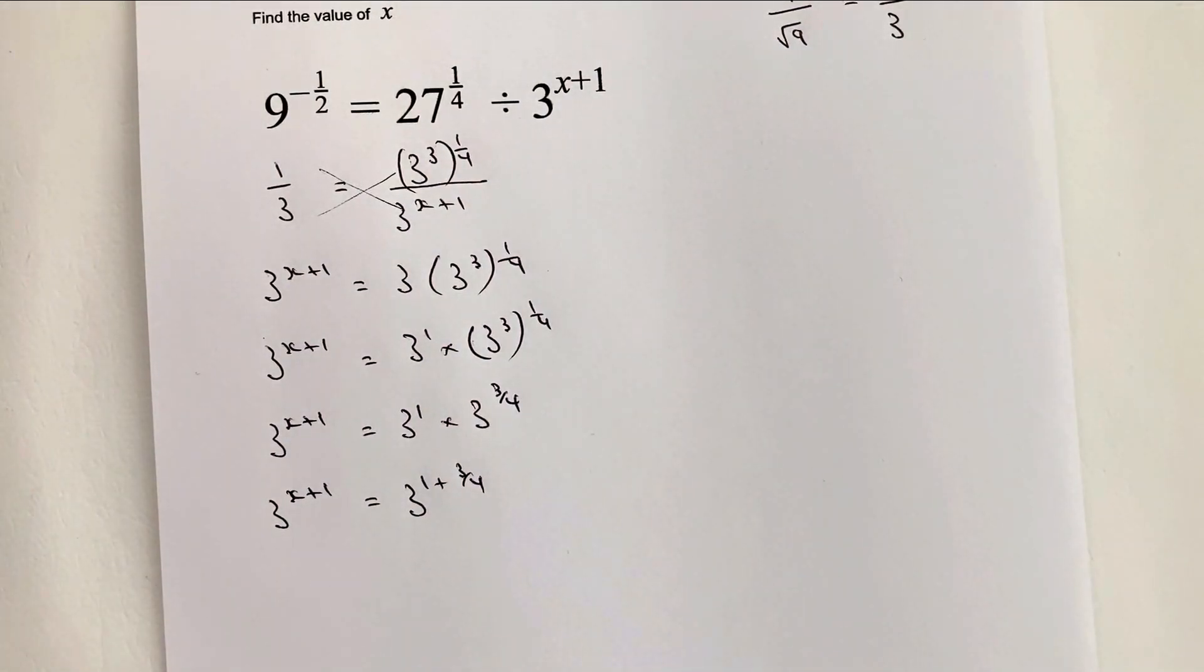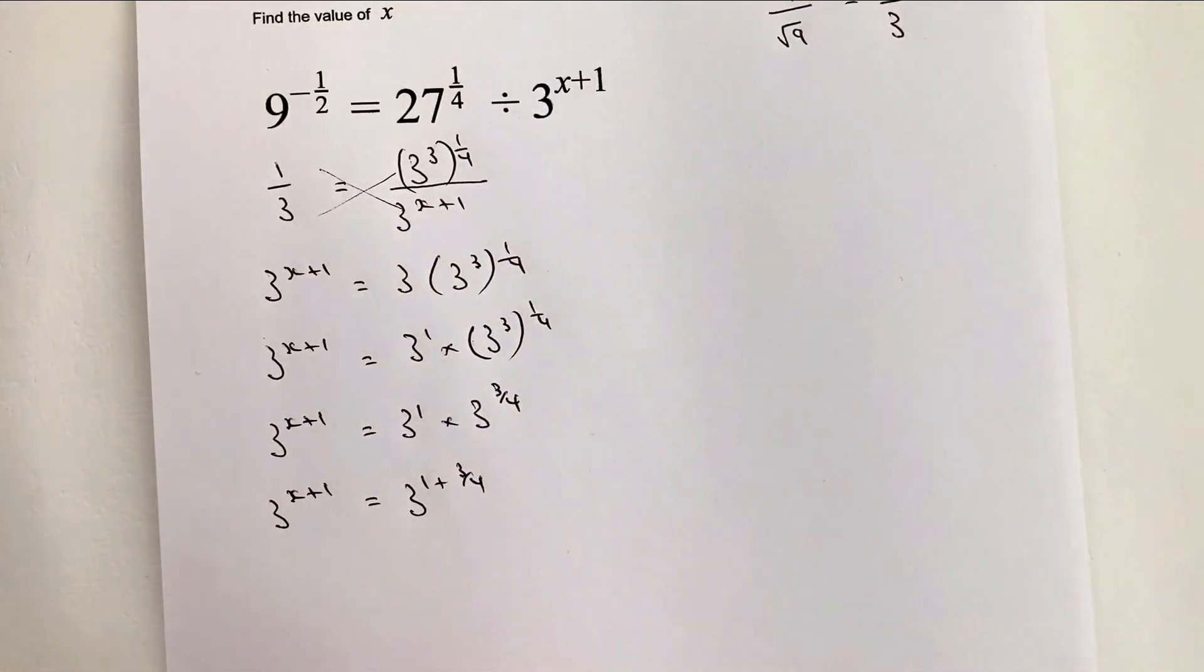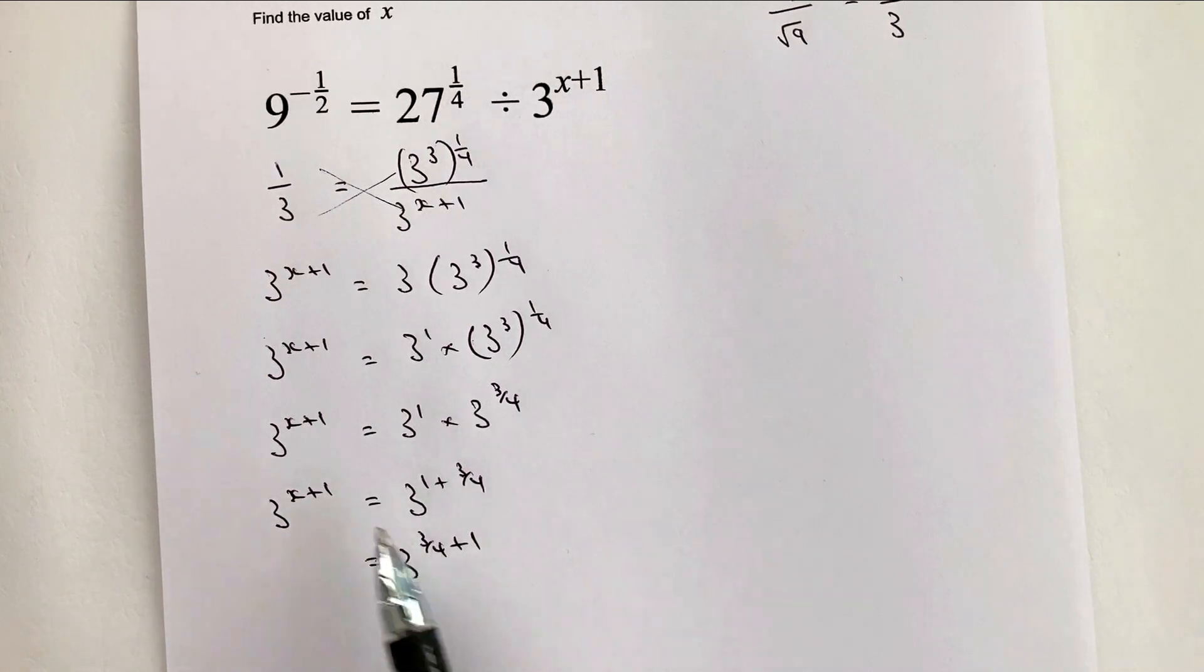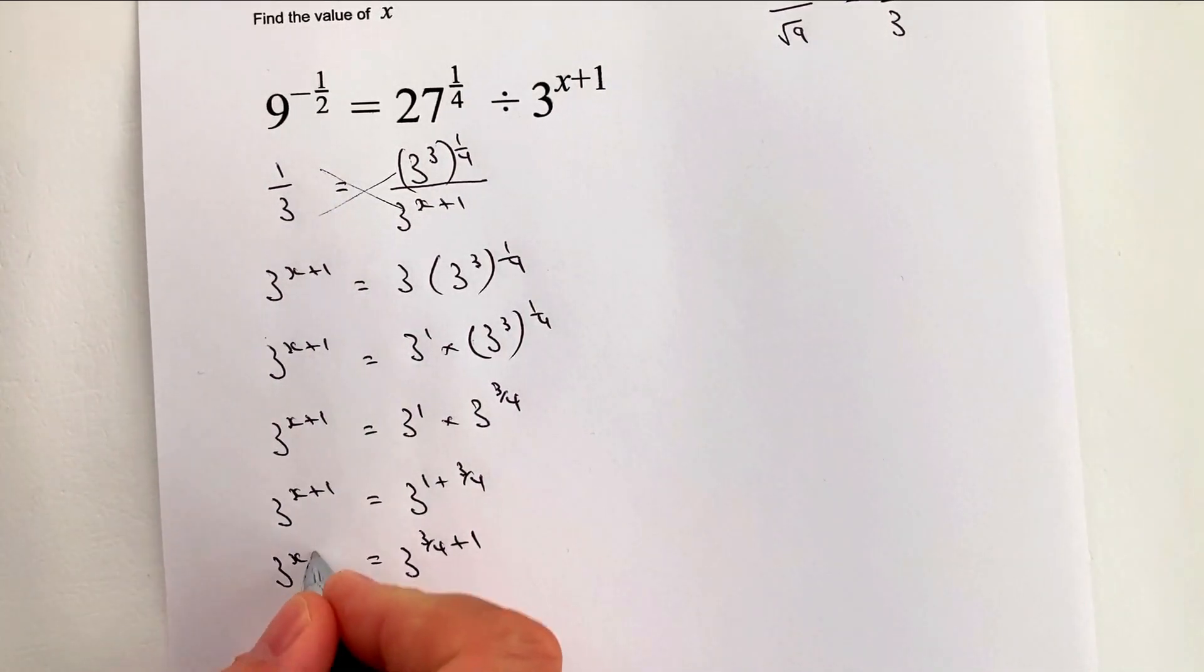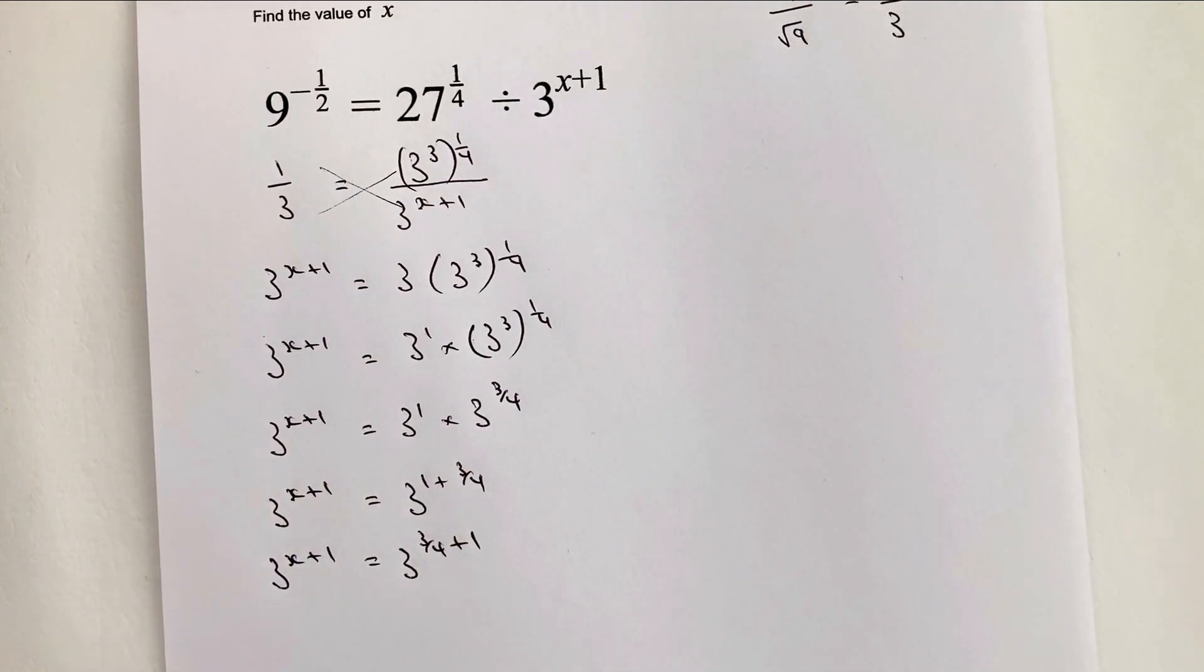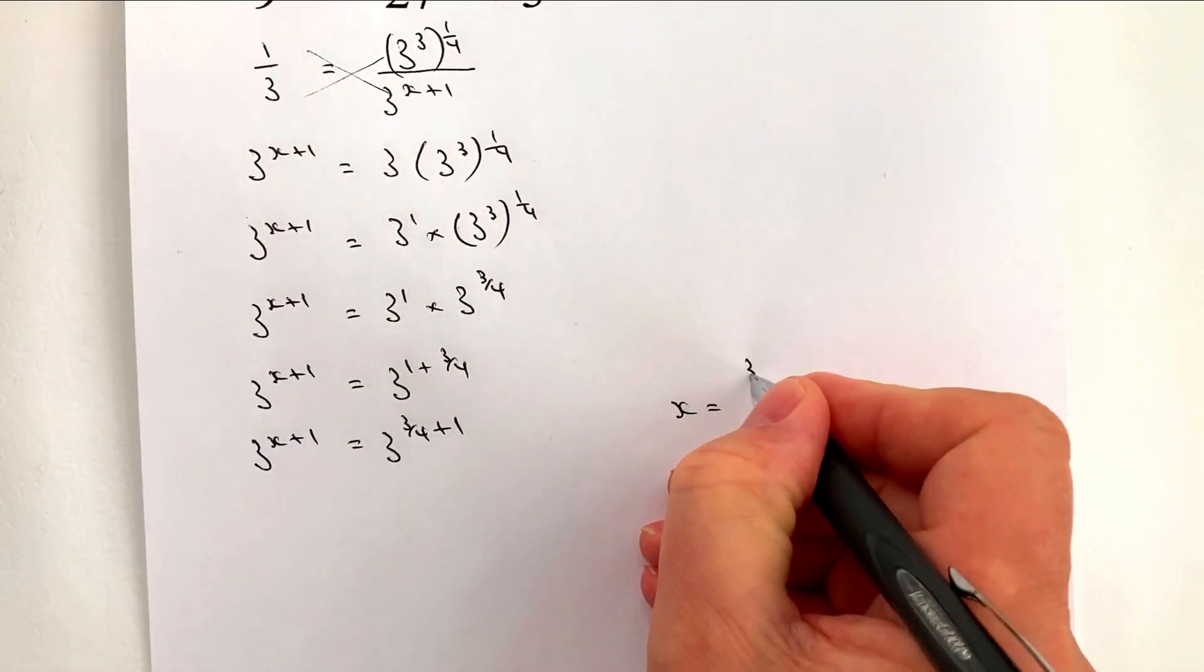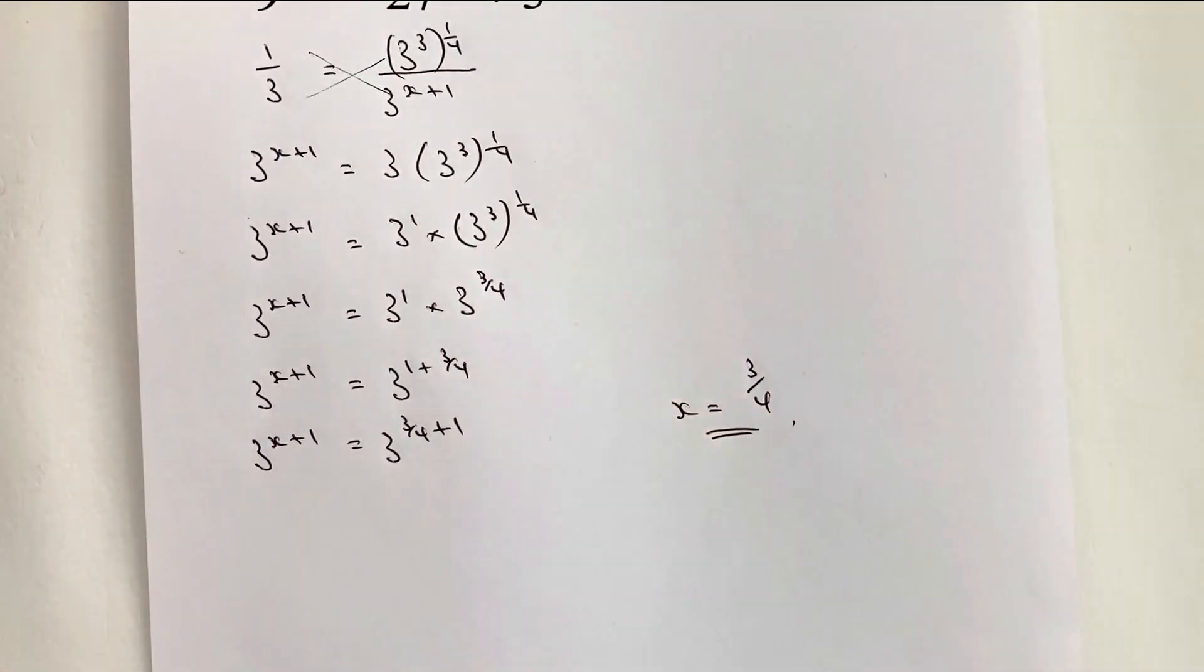So what I'm going to do is I'm going to just write that slightly differently, which is 3 to the power of 3 quarters plus 1. And hopefully you'll see that this matches exactly the 3x plus 1. So with this particular question, the value of x must equal 3 quarters. And that would be the answer to this particular question.